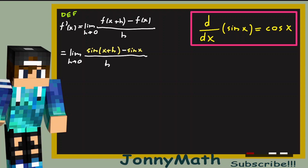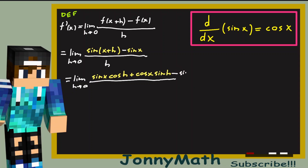Now we just have to solve this limit. Notice that we have x plus h inside the sine function, so we can apply the sum formula for sine. And we just get the limit as h approaches 0 of sine of x times cosine of h plus cosine of x times sine of h minus sine of x, all divided by h.